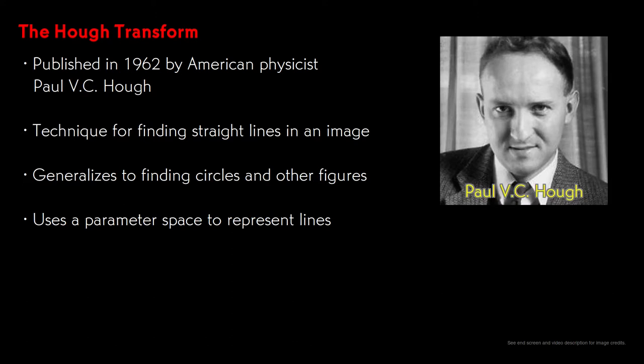The Hough Transform is a technique for finding straight lines in an image. Variations on the Hough Transform have been developed to find circles, ellipses, and other figures in images as well. All of them work by using a parameter space to represent the lines or other figures.